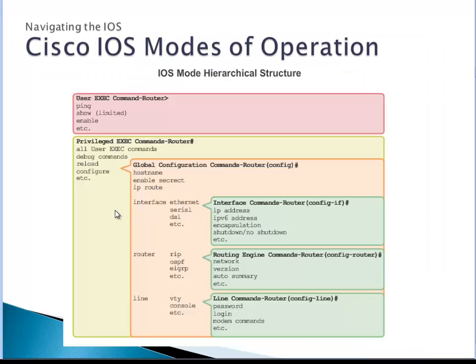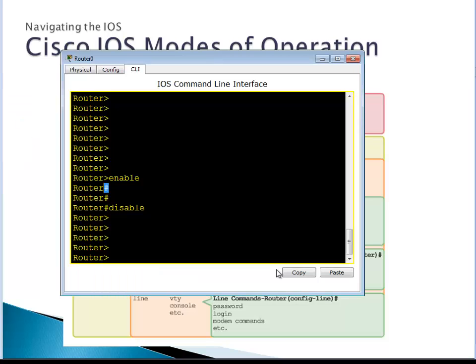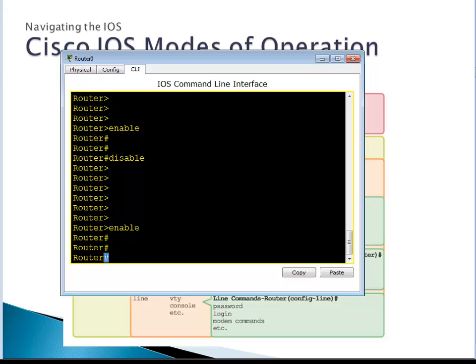In privileged exec mode, all user exec commands, debug commands, reload, and configure commands are available. However, you can't do configuration directly from this mode. To configure the router, you have to go up one more level to global configuration mode — any configuration done there takes effect globally. You can't jump modes; it's like stepping stones. You can't go from user mode directly to global configuration mode.